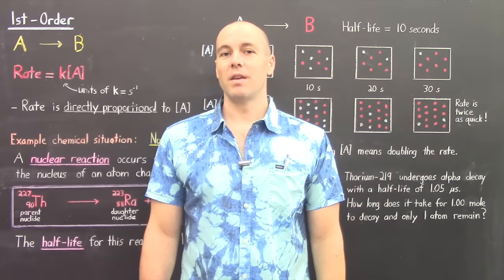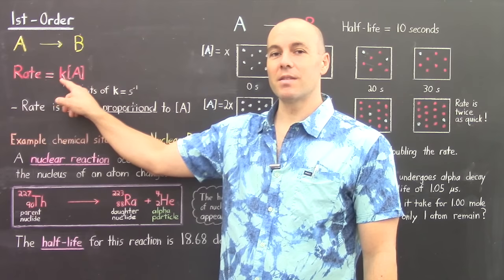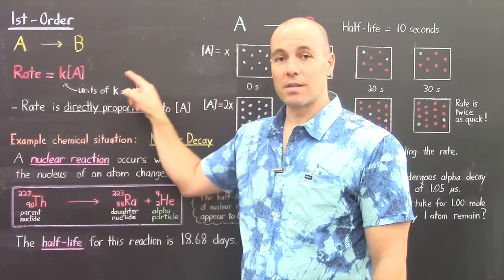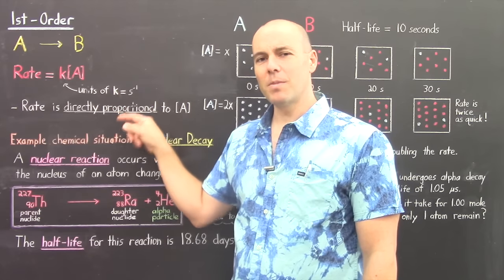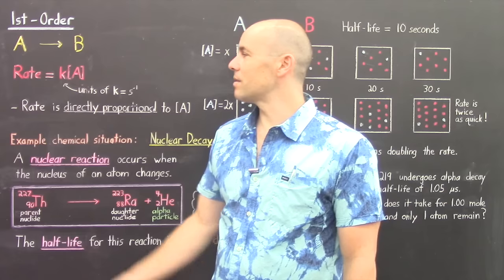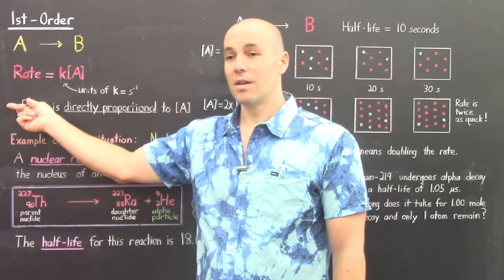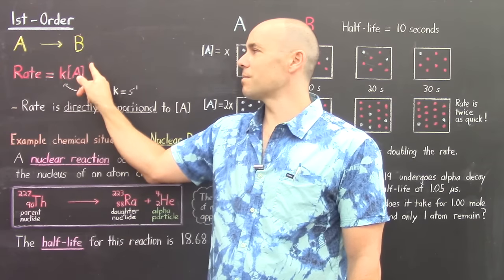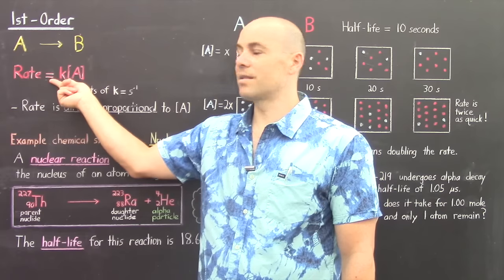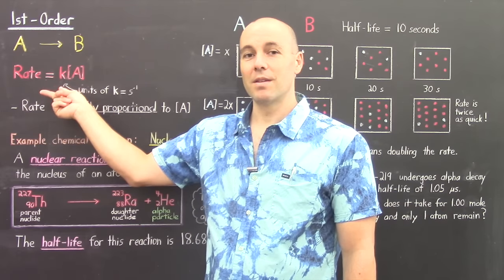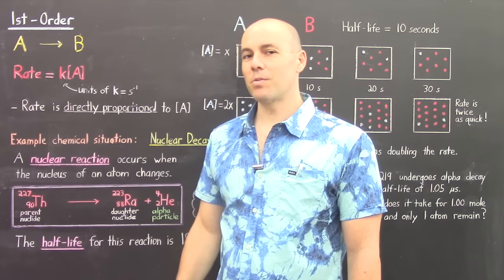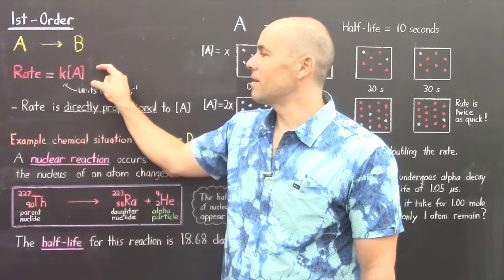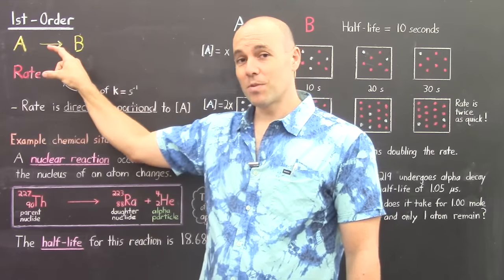A reaction is first order if its rate law has the form: rate equals a constant times the concentration of the reactant raised to the first power. Here the constant has units of per second (seconds to the negative 1), because the rate units of molarity per second, divided by concentration in molarity, leave the constant with units of per second. In a first order reaction, the rate is directly proportional to concentration — doubling the concentration doubles the rate.